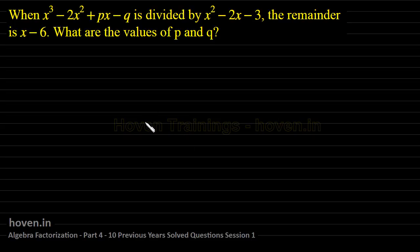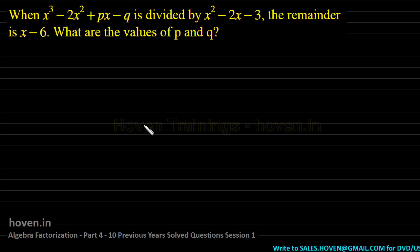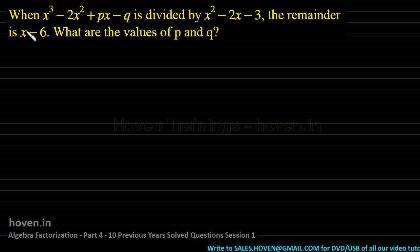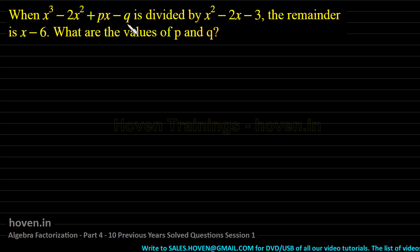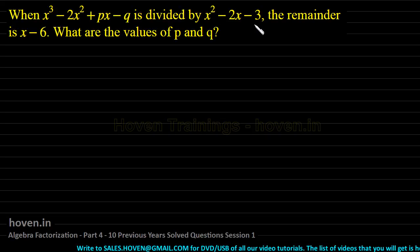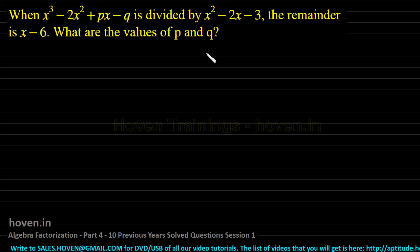In this session, we shall take up questions that have been asked in the previous years. We shall take 10 questions one by one. Let us start with our first question: when x³ - 2x² + px - q is divided by x² - 2x - 3, the remainder is x - 6. What are the values of p and q?